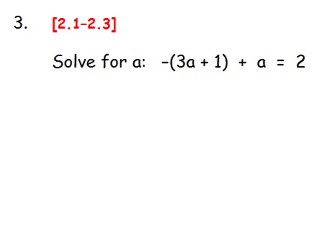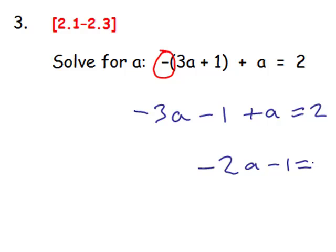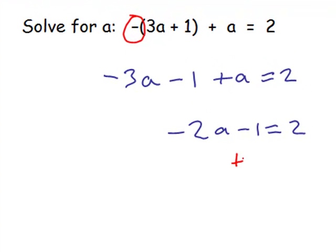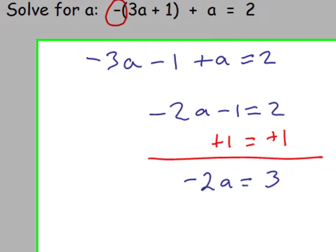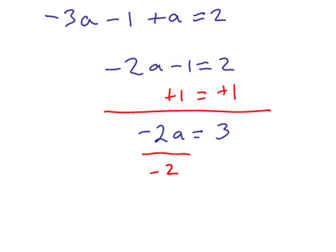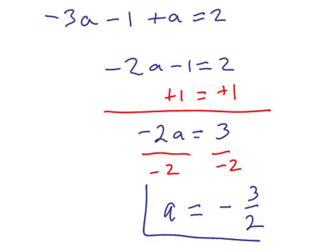Number 3. This comes from chapter 2 where we solve an equation. The first thing we must do is clear parentheses — the negative outside must be distributed as if multiplying by negative 1. Negative 1 times 3a gives negative 3a, and minus 1 plus a equals 2. Combining like terms: negative 2a minus 1 equals 2. Adding 1 to each side gives negative 2a equals 3. Dividing each side by negative 2, we get a equals negative 3 over 2.